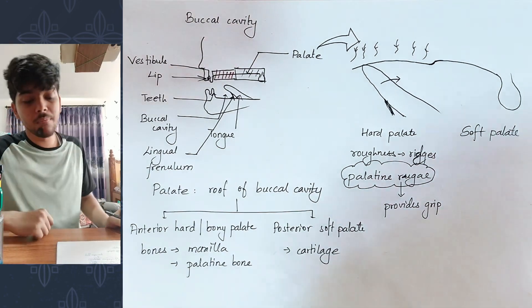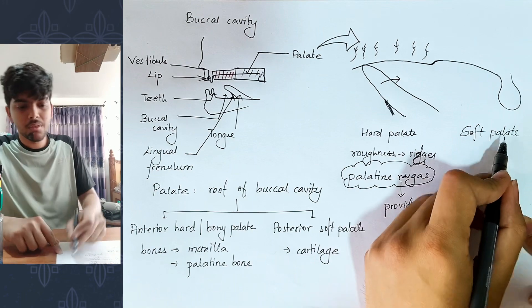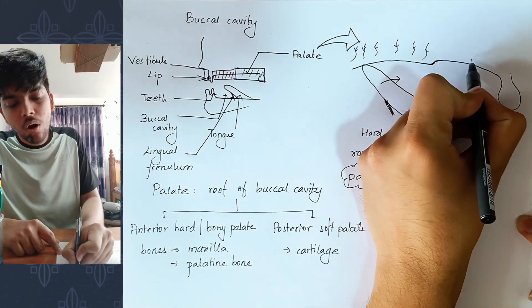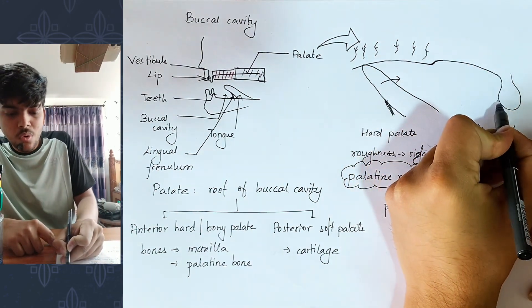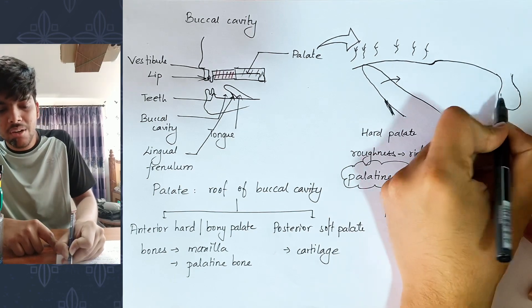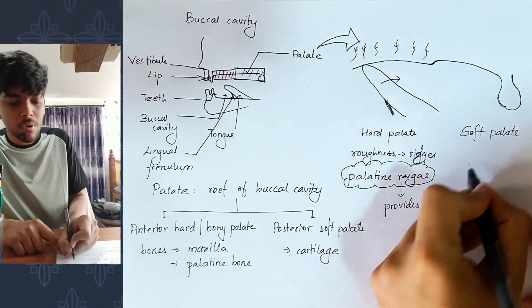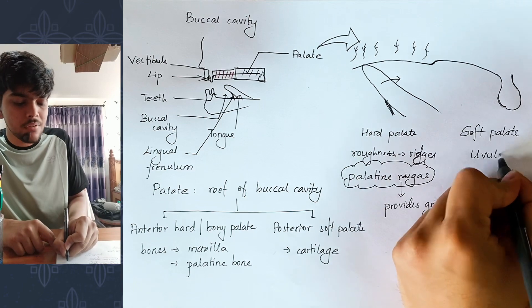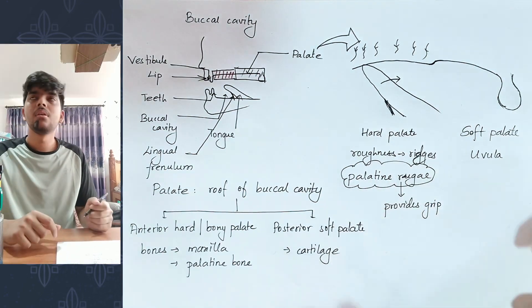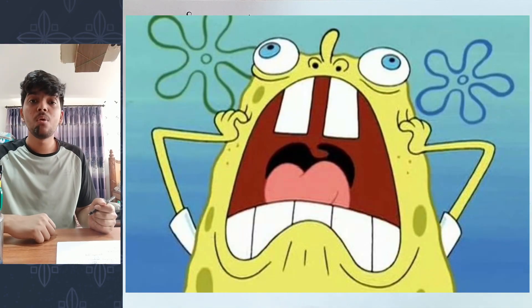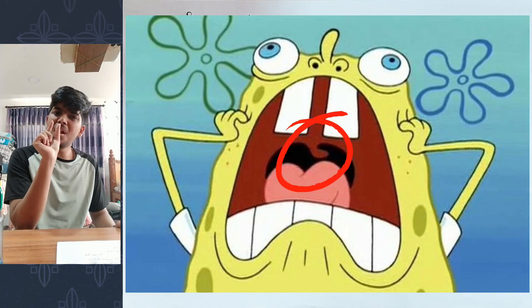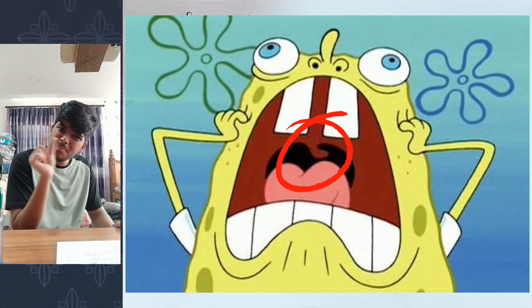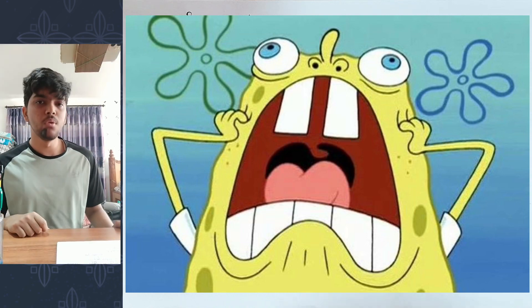The soft palate is special — it is soft and small. At the posterior end of the soft palate there is a small hanging structure called the uvula.